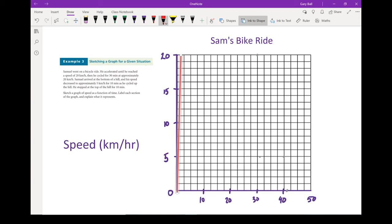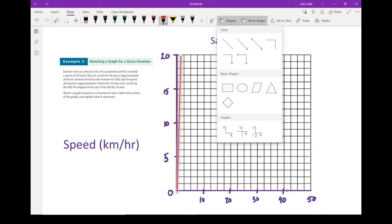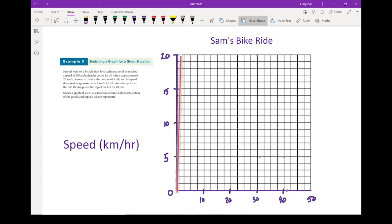So once he accelerates to 20 kilometers an hour, Sam goes for 30 minutes at a constant speed. So if his speed doesn't change, we're going to put a horizontal line. And it's going to last for a full 30 minutes.